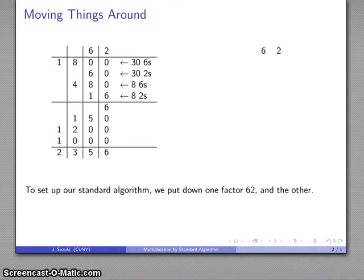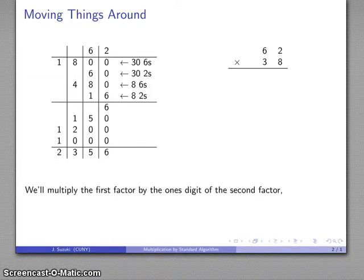We put down one factor, 62. We put down the other factor, 38. We write that multiplication sign. And then what do I do? Well, I multiply this factor by the ones digit.